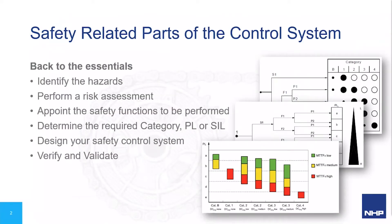We must always establish the requirements of our safety application by going back to the essentials. Recall our previous safety essentials part one session on safety concepts. First off, identify the hazards associated with the machine — crushing, cutting, impact, pinch points, etc.